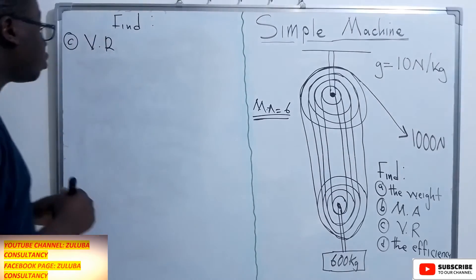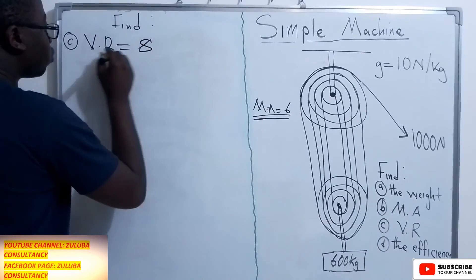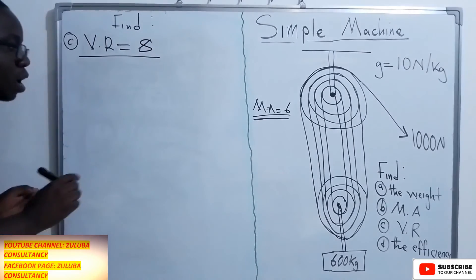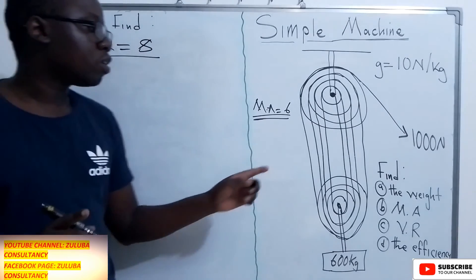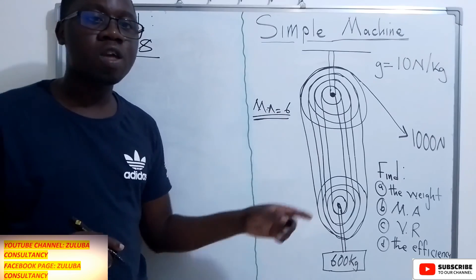Hence, the velocity ratio for this pulley system is equal to eight. So remember, you only count the lines that are connected to the moving pulley.